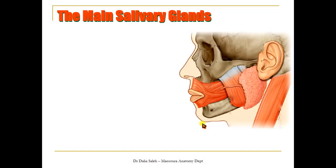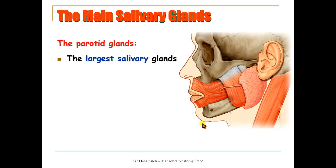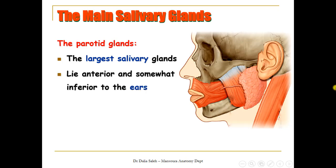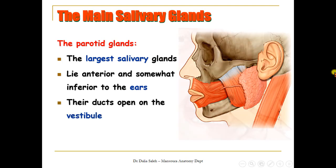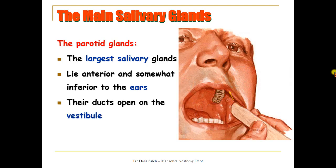The parotid glands are the largest salivary glands. They lie anterior and somewhat inferior to the ears, and their ducts open into the vestibule of the mouth. You can see the opening of the parotid duct opposite the upper second molar tooth.